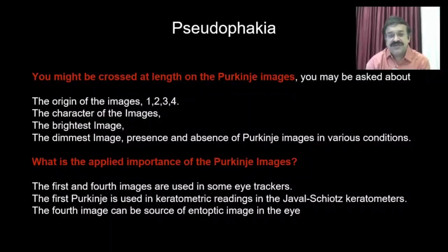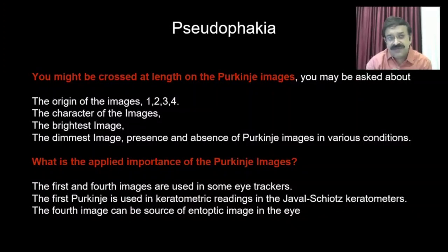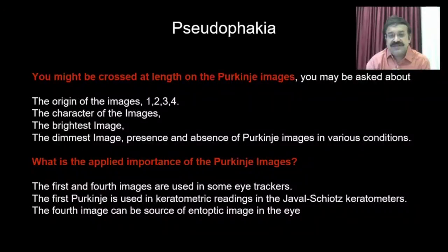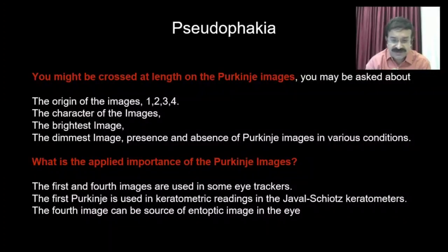You might be questioned at length on Purkinje images. Prepare for: the origin of images one through four, the character of each image, the brightest and dimmest, and the presence or absence of Purkinje images in various conditions. The Purkinje image is absent in aphakia — only the first and second are present in advanced immature or mature cataract. The brightest image is the first and second overlapped. The first three images are virtual, erect, and move in the same direction; the fourth is a real, inverted image moving in the opposite direction.